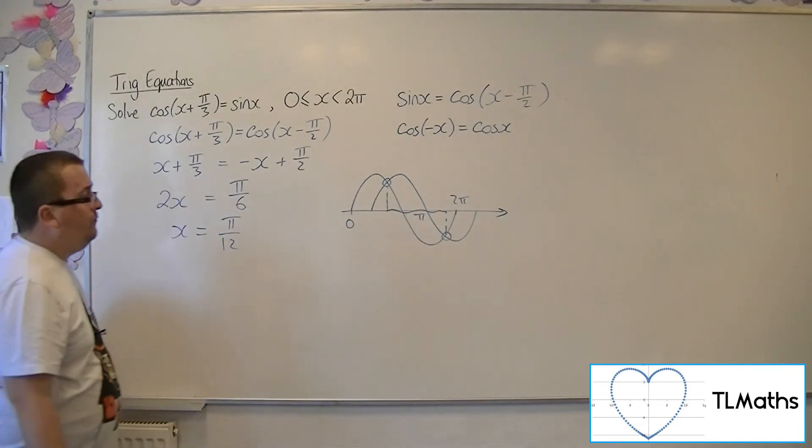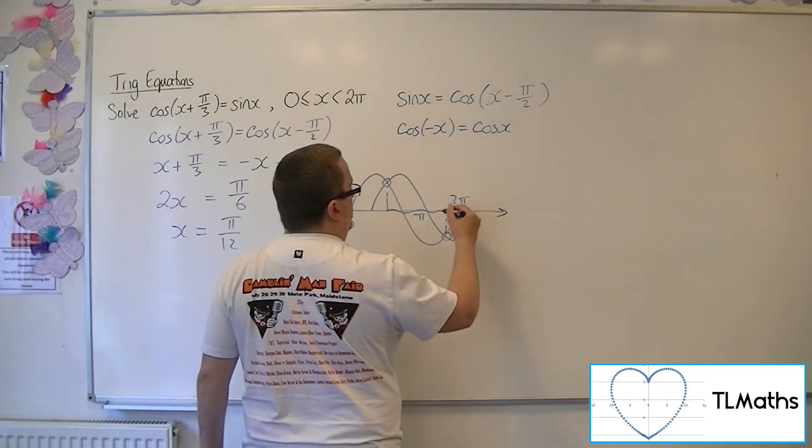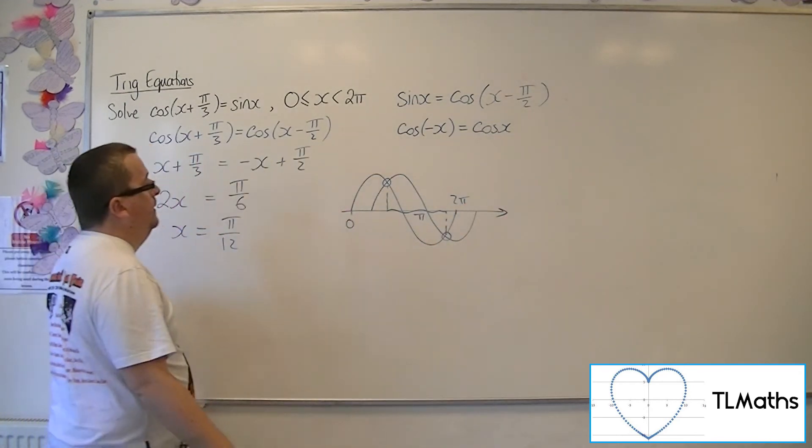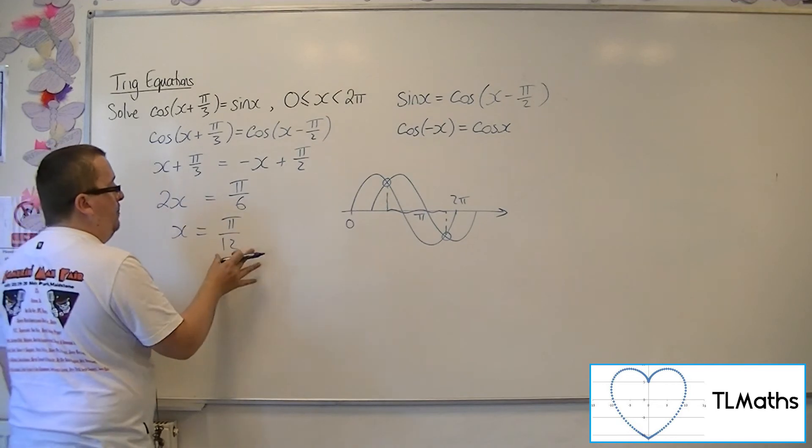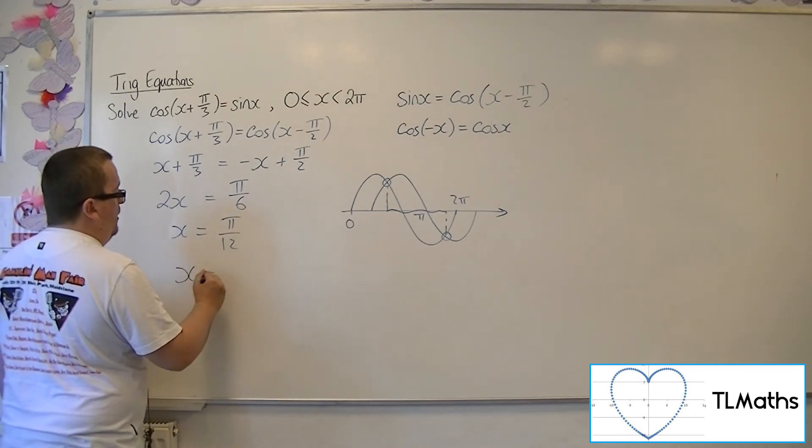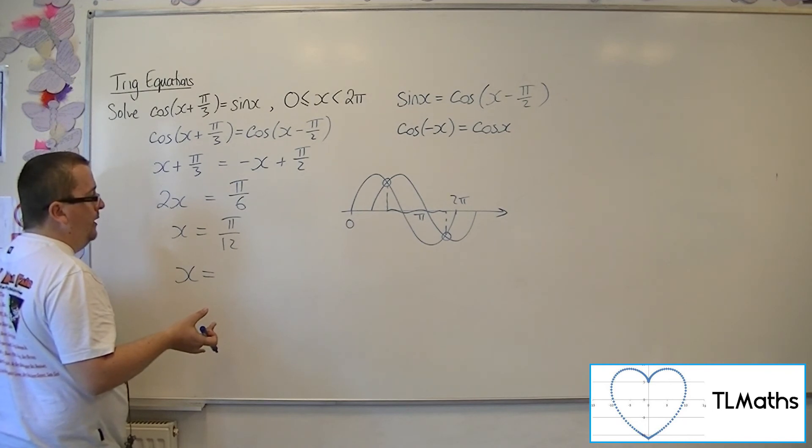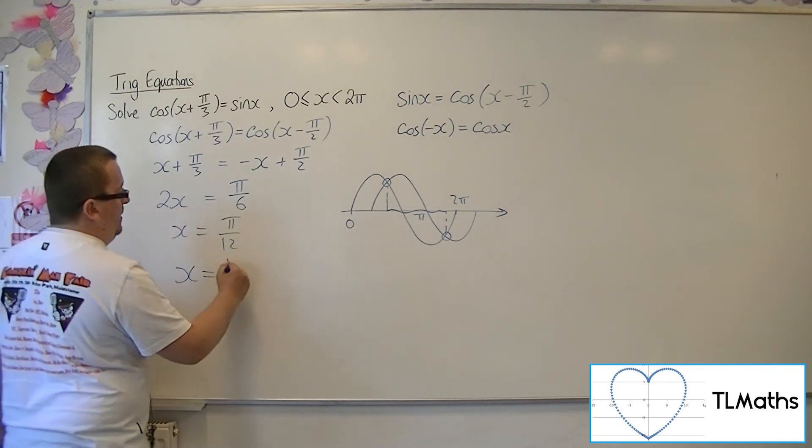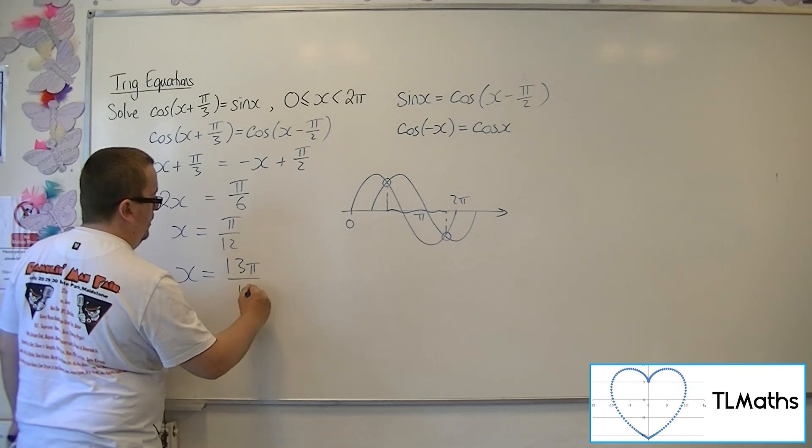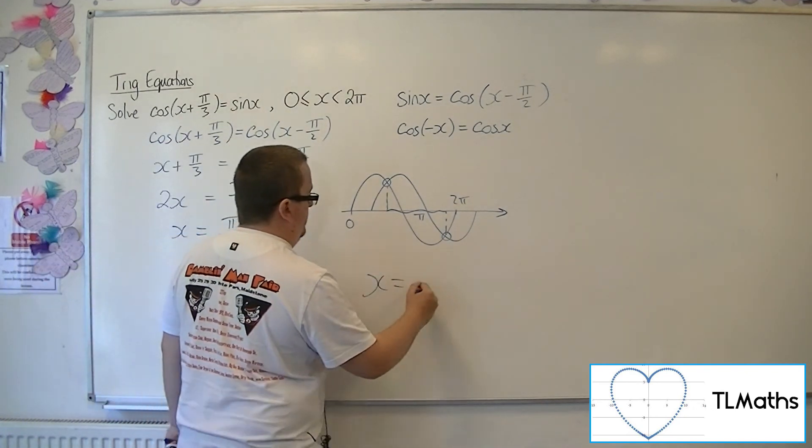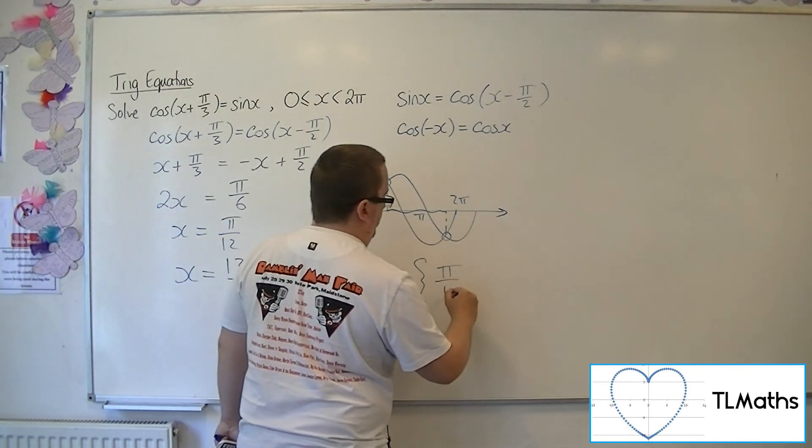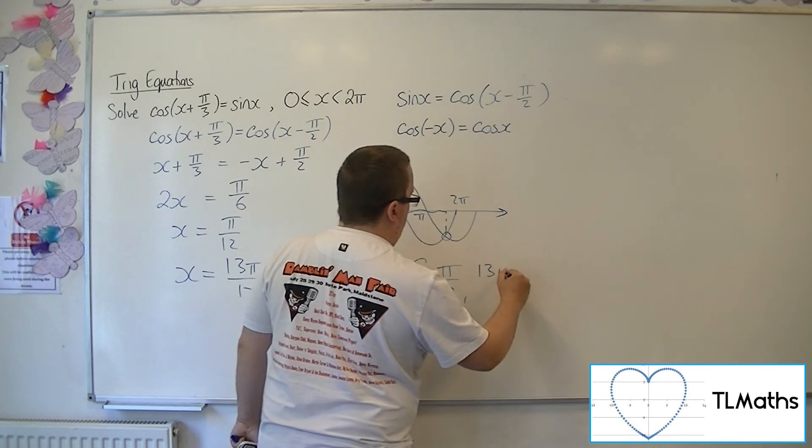So the next time these two cross will be another pi along here. And so I just need to add pi to that to get my second solution between 0 and 2 pi. So adding pi to that gets me 13 pi over 12. So the two solutions are pi over 12 and 13 pi over 12.